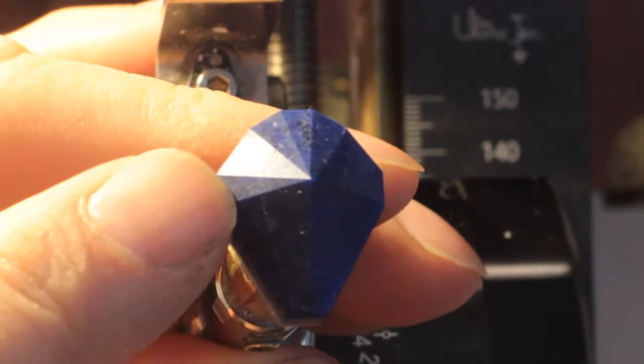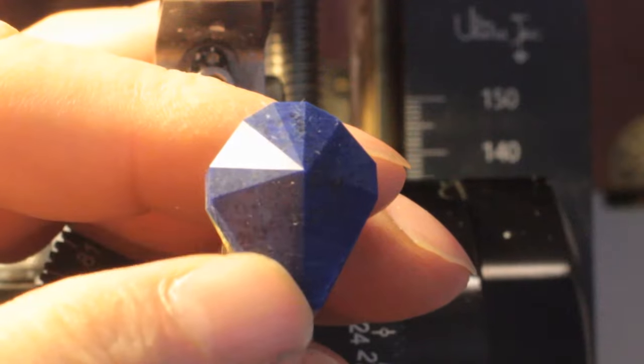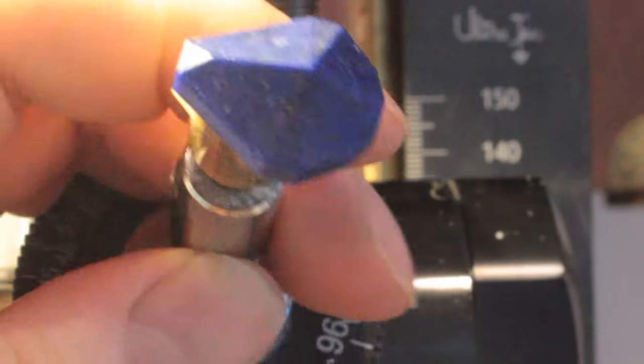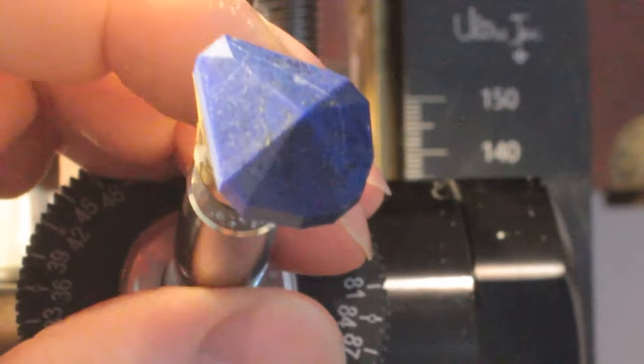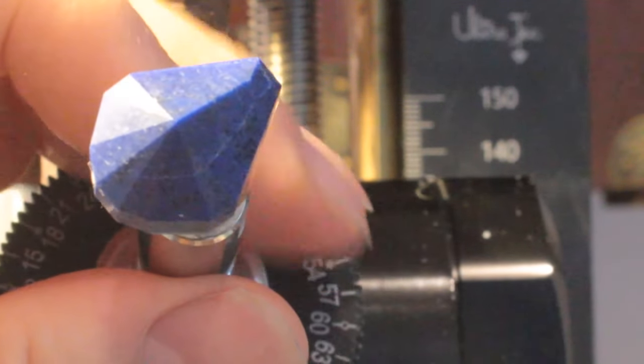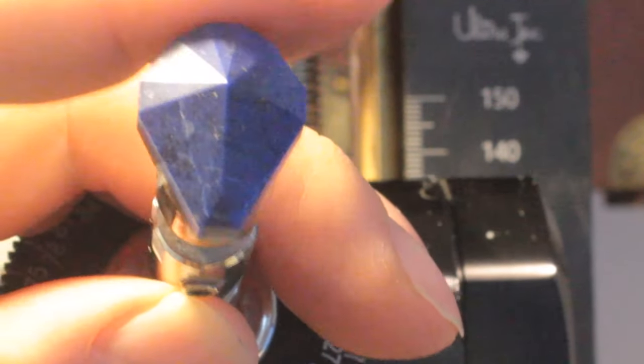And lapis is porous, so I'm worried that the slurry, the black slurry, especially with the 3000 grit, would get sucked into the stone. I don't want that.